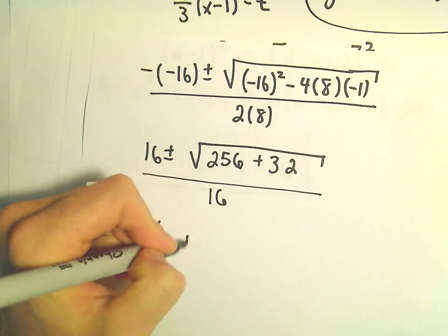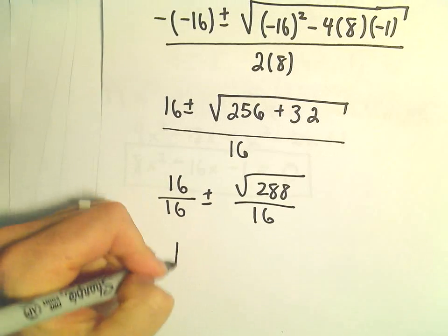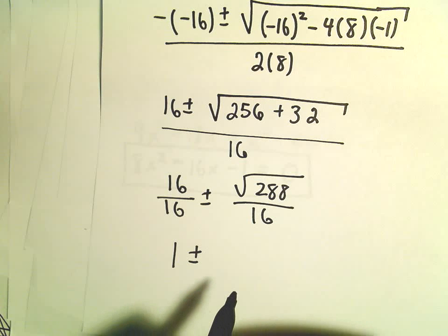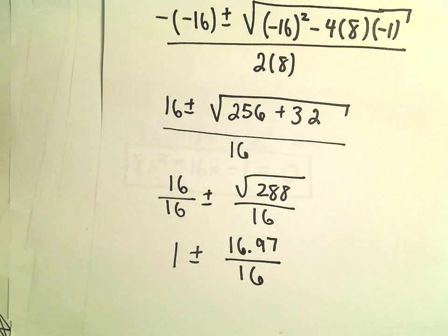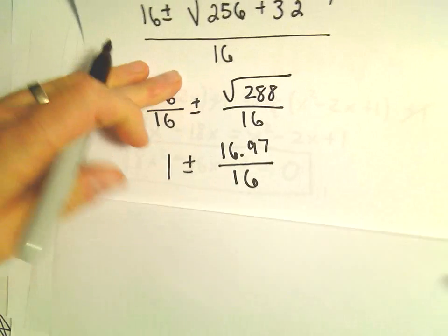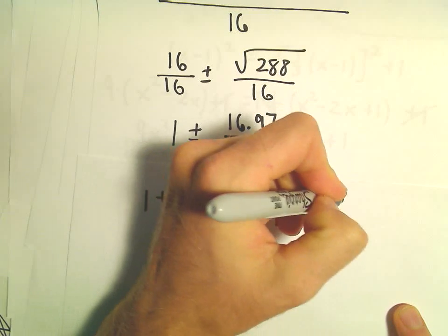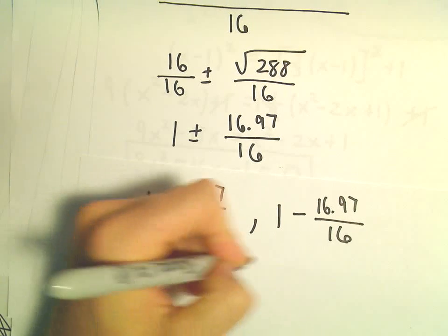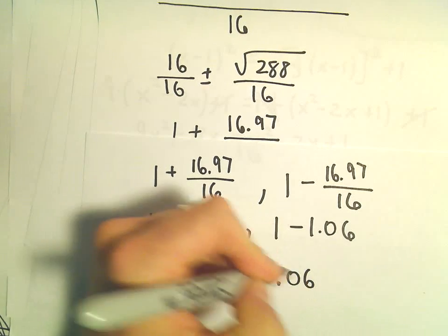So this is going to be 16 over 16 plus or minus the square root. I guess 256 plus 32, that's going to be 288 over 16. So that's going to be 1 plus or minus, I guess the square root of 288. That's not going to work out too nicely. I think I'm going to go ahead and approximate it, though. So the square root of 288 is roughly 16.97, all over 16. All right, so keep simplifying here a little bit. We've got 1 plus 16.97 over 16, and then 1 minus 16.97 over 16. So let's see, 16.97 divided by 16, this is going to be roughly 1.06. So let's see, we'll get 2.06, and I guess we'll get a negative 0.06 when we subtract.